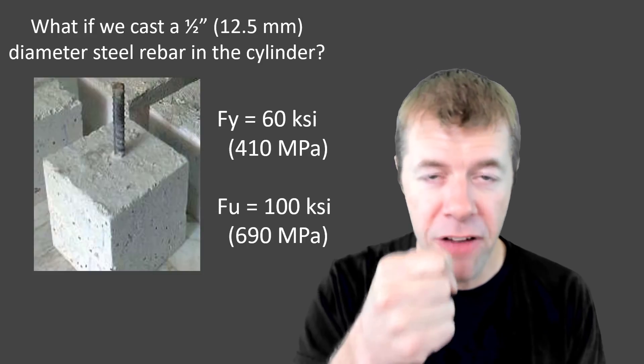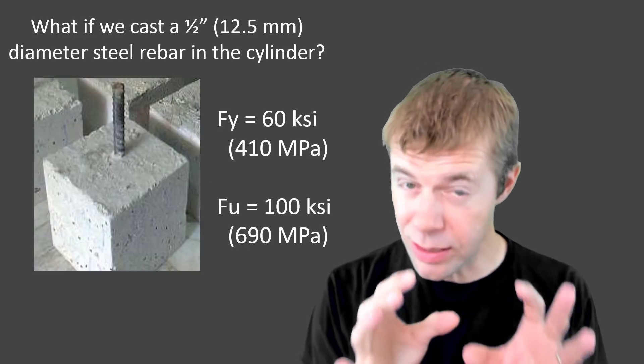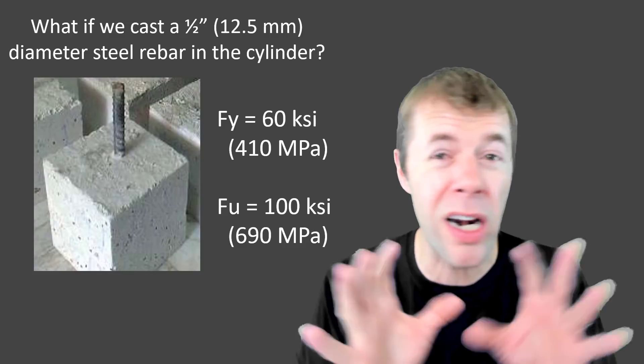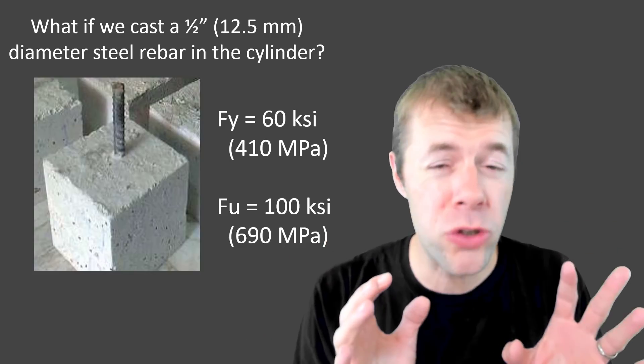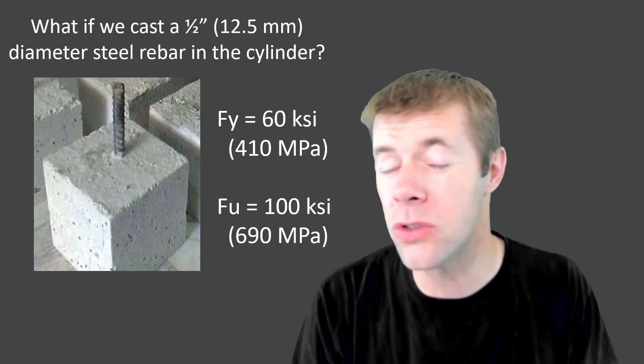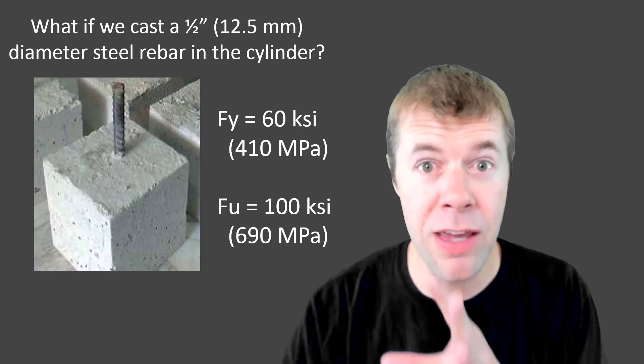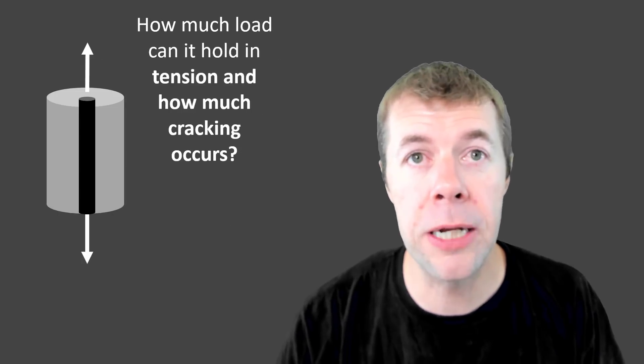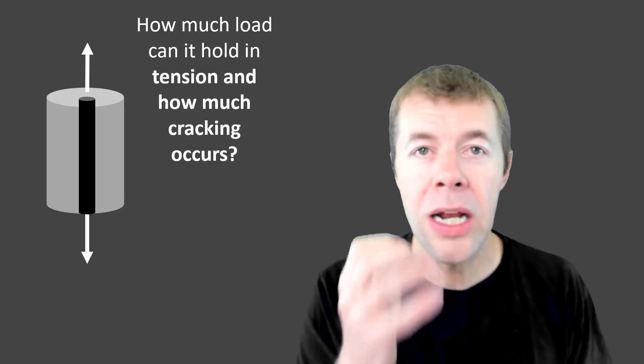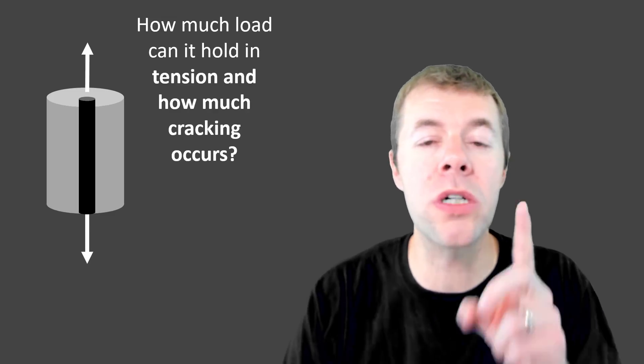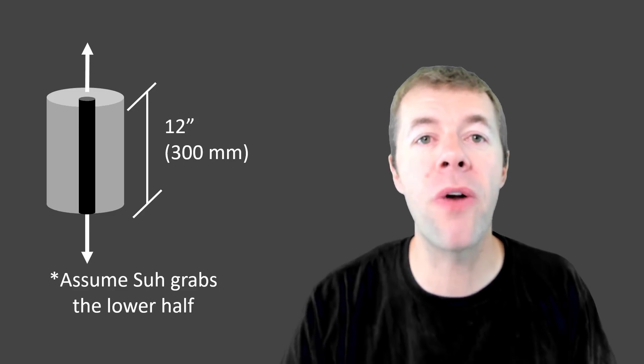Now, what if we cast a one-half-inch diameter rebar, this is a steel rebar, inside the middle of our cylinder. This is not a high-strength rebar, normal-strength rebar with 60 KSI yield strength, and an ultimate breaking strength of about 100 KSI. And I've given the MPAs on the screen. So how much load can it hold in tension? And how much cracking really happens? We're going to go back to our same friend, Sioux.